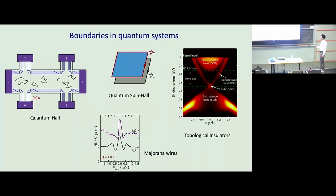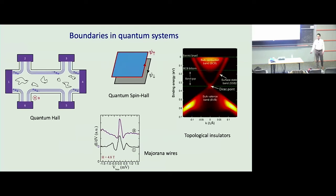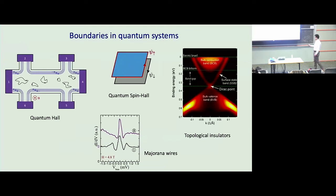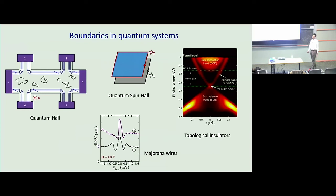Over the last several decades we've learned that if you take a quantum system, a lot of interesting phenomena can happen on the boundary. In particular, if you have a topological gapped bulk, it often supports protected boundary modes. A lot of us have worked on the precise relation between the bulk gapped phase and the constraints on the boundary. When the bulk is gapped, these relations are understood very well.